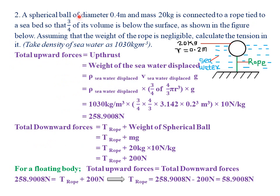Our second example reads that a spherical ball of diameter 0.4 meters — so the radius is 0.2 meters — and mass of 20 kg is connected to a rope tied to a seabed, so that three quarters of its volume is below the surface. When finding the volume of the fluid displaced, we use only three quarters of its volume. Calculate the tension in the rope. We are given that the density of seawater is 1,030 kg/m³.